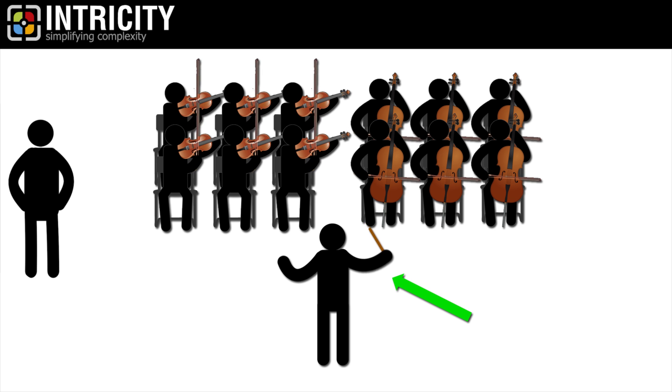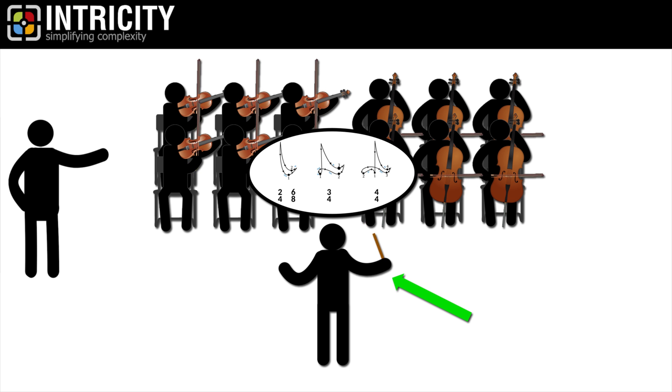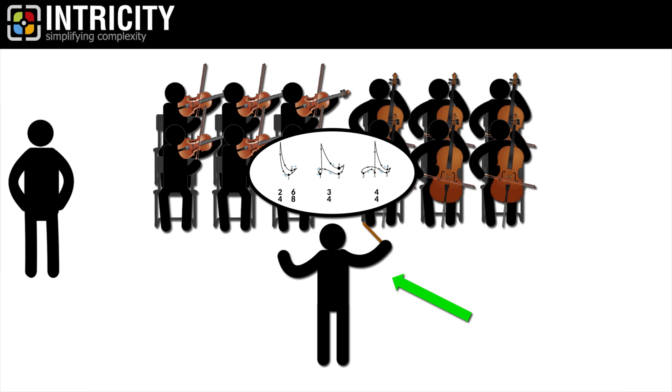At the front of every orchestra is a conductor with his waving arms and strange faces. These odd motions cue all the instruments in the symphony so that they're both timed and aligned with the right level of intensity.